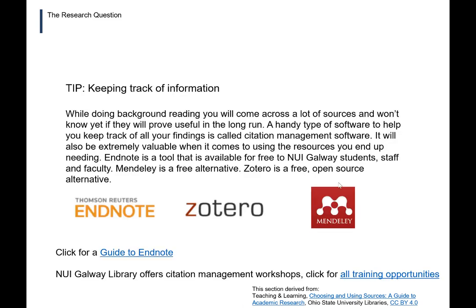Keeping track of information is important. Even at this stage of putting together your research question based on background reading, it's important to start keeping track of information right away. This will help to avoid plagiarism and help as you're putting together your references. If you're losing track of information, not only are you in danger of plagiarism, but you're going to waste time later going back and trying to recreate all of the information and the sources you got it from. You're going to come across a lot of sources and you won't know right away if a source will prove useful in the long run.